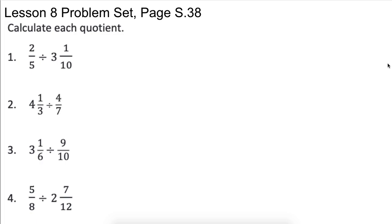So our equivalent problem here would be 31 tenths. Two-fifths divided by 31 tenths. Then we need to write our equivalent multiplication problem, which would be the reciprocal of 31 tenths. The reciprocal of 31 tenths would be ten over thirty-one. So we end up with two-fifths times the reciprocal of 31 tenths, which is ten over thirty-one.